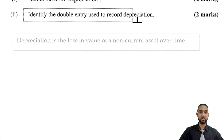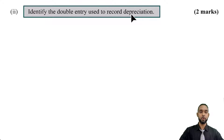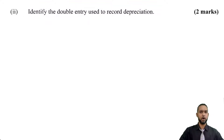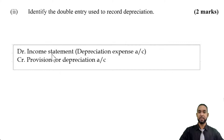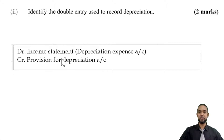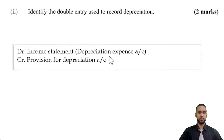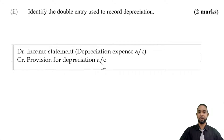The next part of the question asks us to identify the double entry used to record depreciation — again, two marks. We have a couple of options. You can either debit the income statement or the depreciation expense account, and credit the provision for depreciation. The convention used in CSEC POA in the Caribbean is to debit the income statement as the adjusting and closing entry for depreciation. However, there has been a movement towards using the depreciation expense account, which is more American-based, whereas we are usually British-based. Neither one is incorrect.